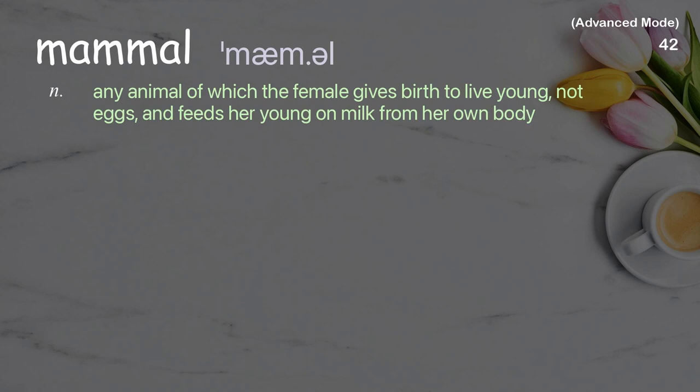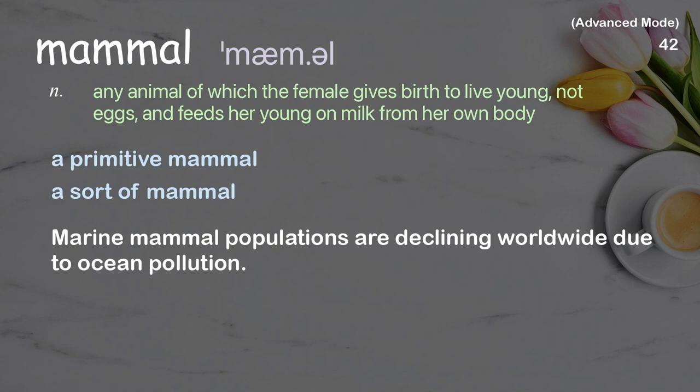Mammal: Any animal of which the female gives birth to live young, not eggs, and feeds her young on milk from her own body. Examples: A primitive mammal, A sort of mammal. Marine mammal populations are declining worldwide due to ocean pollution.